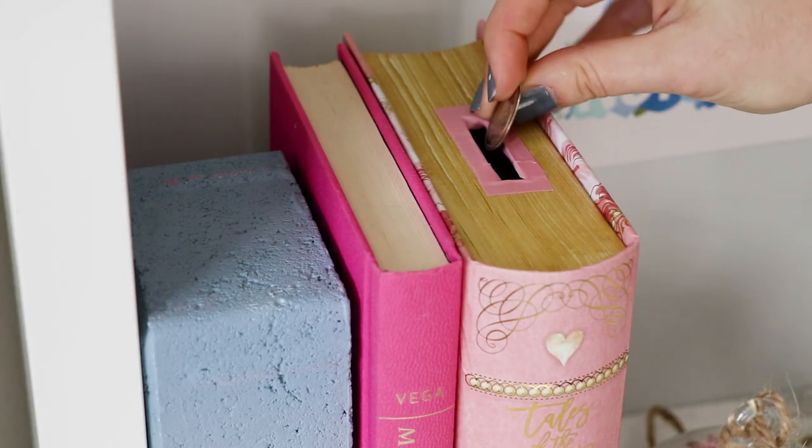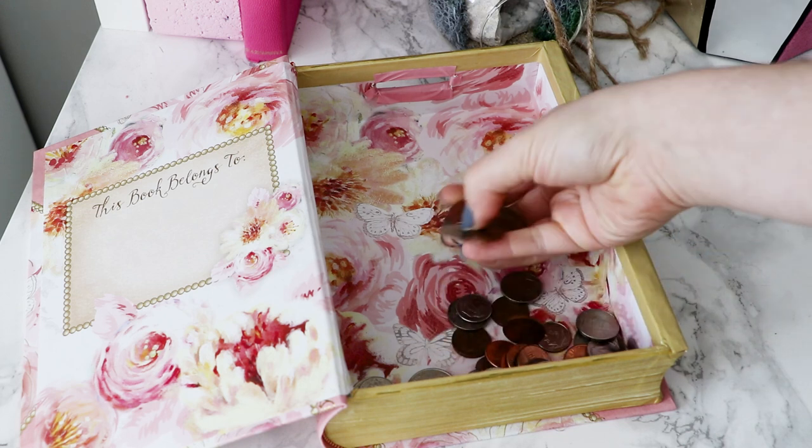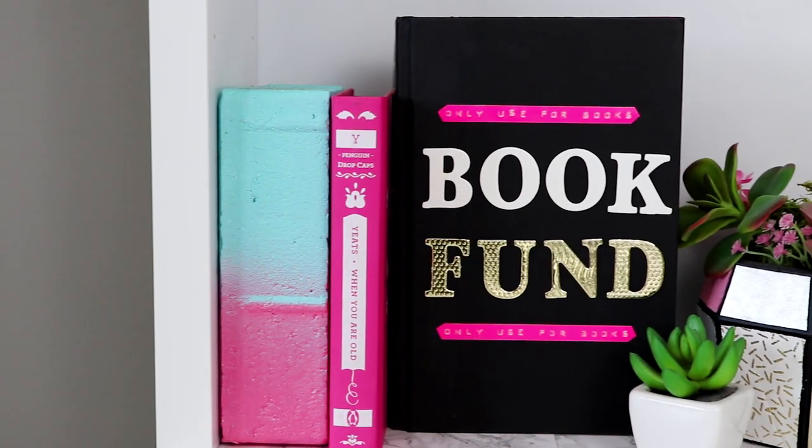And that's all there is to it. Now that you have a slot at the top of your book box, you can stand it up and collect all of your spare change. But if you don't have a book box,